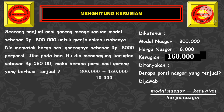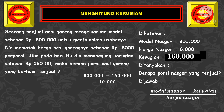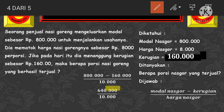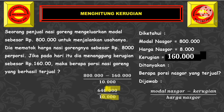Kita masukkan angka-angkanya ke dalam rumus: modal nasi goreng 800 ribu rupiah dikurangi kerugian 160 ribu rupiah, dibagi harga nasi goreng 10 ribu rupiah. Hasilnya: 800 ribu dikurangi 160 ribu = 640 ribu rupiah, dibagi 10 ribu. Kita coret nolnya — di atas 4, di bawah juga 4. Sehingga 64 dibagi 1, hasilnya adalah 64 porsi.